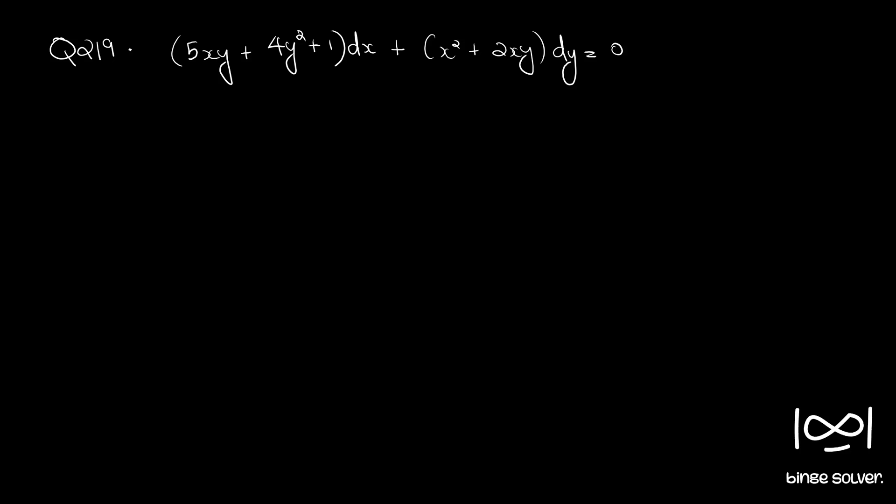Question 219. 5xy plus 4y squared plus 1 dx plus x squared plus 2xy dy equal to 0.